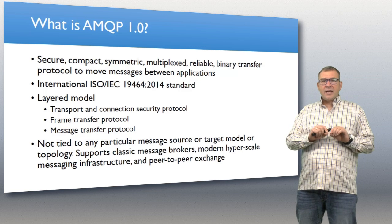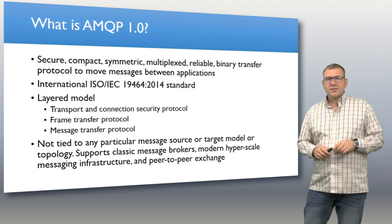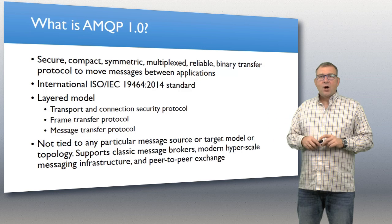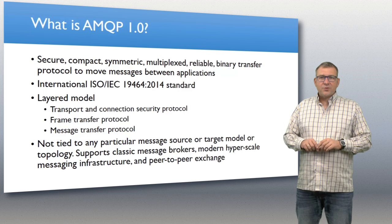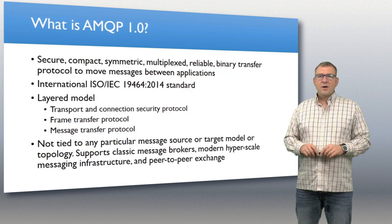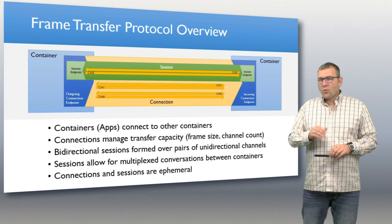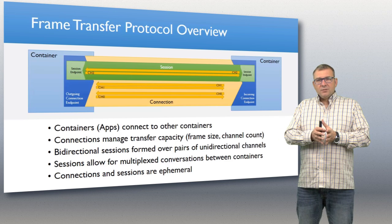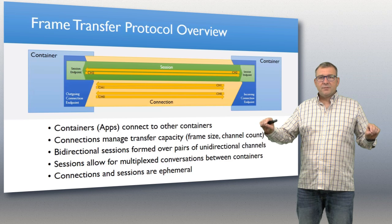What AMQP provides is a layered model. There's an underlying security foundation that is very explicit about how AMQP ties into transport-level security and other security models. It also has a connection-level authentication mechanism using the standardized SASL framework. On top of that is a frame transfer protocol defining how frames get moved between parties, and then a message transfer protocol on top of that. I'll give you that overview now and drill down into more details in further episodes.